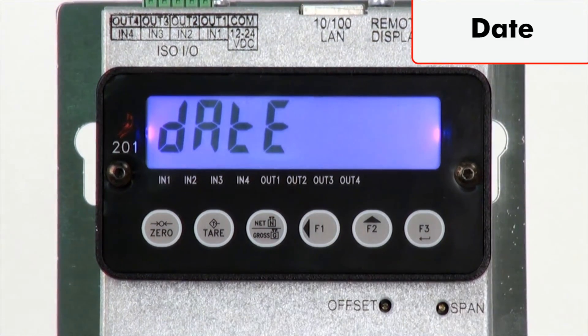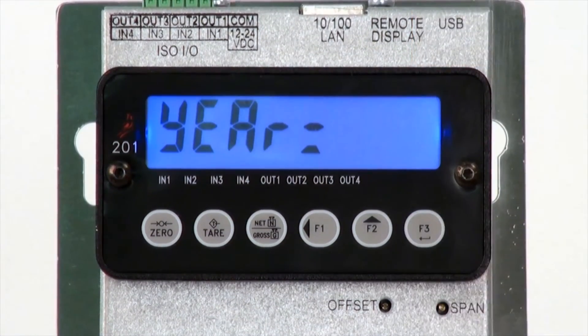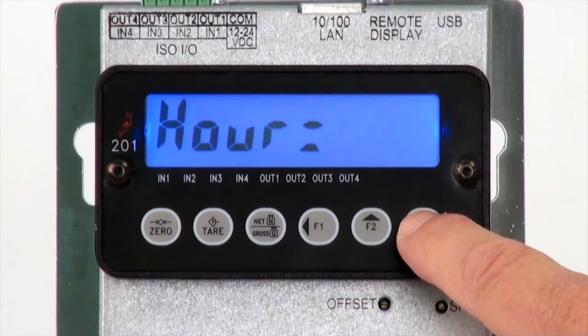Date is for the time and date cycling. Settings include year, month, day, hour, and minutes.